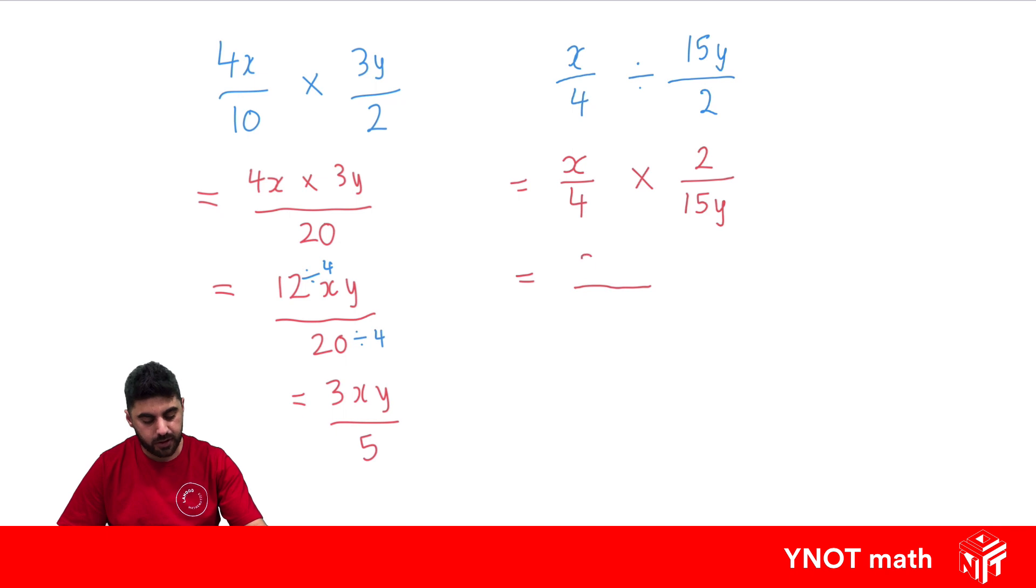x times 2 is just 2x. 4 times 15y is going to be 60y. We can simplify this a little bit with the numbers because they're both divisible by 2. 2 divided by 2 gives us 1. So we're just left with 1x or just x. And 60 divided by 2 is 30. So we're left with 30y in the denominator.